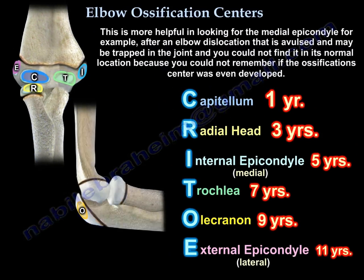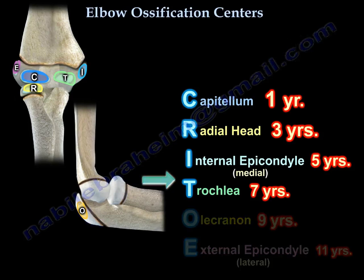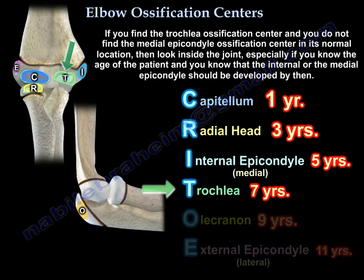This is most helpful when looking for the medial epicondyle — for example, after an elbow dislocation where it may be trapped in the joint and you cannot find it in its normal location because you are unsure if it has even developed. But if you find the trochlea ossification center and you do not find the medial epicondyle in its normal location, then look inside the joint, especially if you know the age of the patient and know that the medial epicondyle should be developed by then.